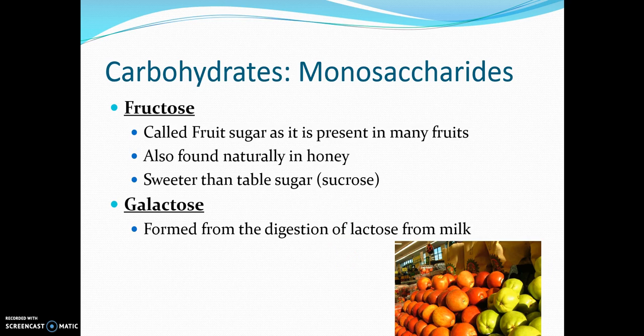Also under monosaccharides we have fructose and galactose. Fructose is a fruit sugar — present in many fruits and also found naturally in honey, and it's sweeter than table sugar. A lot of products today have fructose added to them and it is starting to take over glucose. Galactose is formed from the digestion of lactose in milk — it is a naturally occurring sugar that gives milk a slightly sweeter taste.